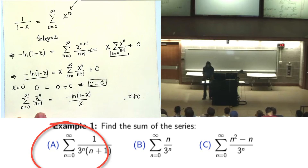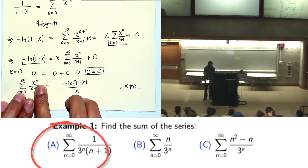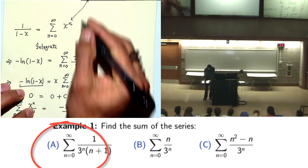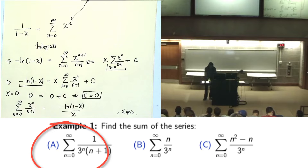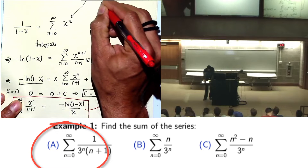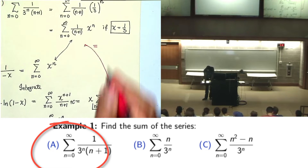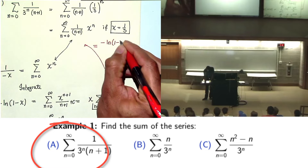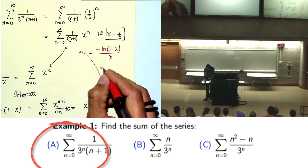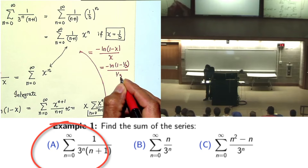Now I divide the function over x. So my series: n varies from 0 to infinity, x to the power n divided by n plus 1, equals negative natural log of 1 minus x divided by x, when x is not 0. My x in the question is one-third, so it's not 0. So the sum equals negative natural log of 1 minus one-third divided by one-third. That's your answer.